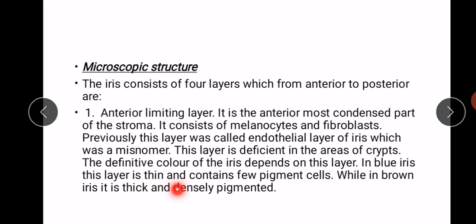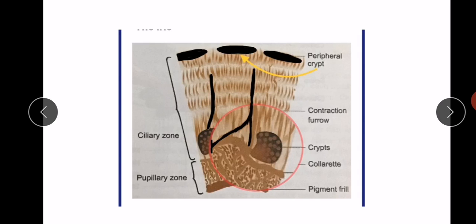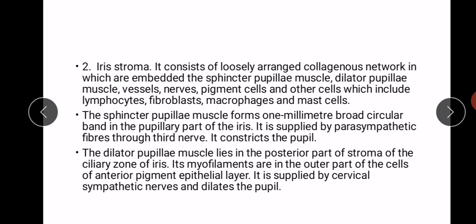In blue iris, this layer is thin and contains few pigment cells, while in brown iris it is thick and densely pigmented. The iris stroma consists of a loosely arranged collagenous network embedded with sphincter pupillary muscle, dilator pupillary muscle, vessels, nerves, pigmented cells, and other cells including lymphocytes, fibroblasts, macrophages, and mast cells.